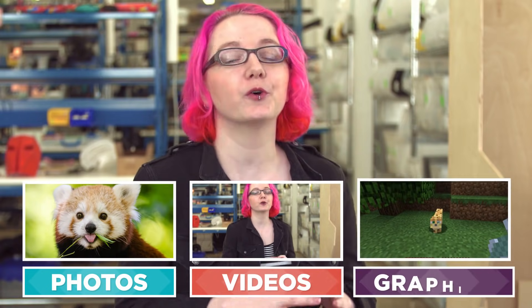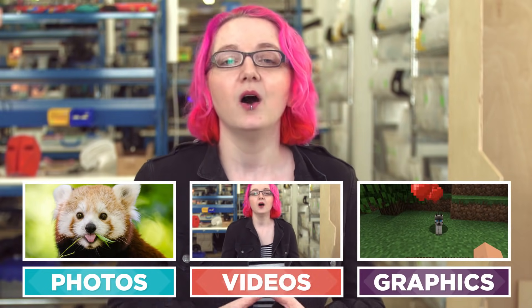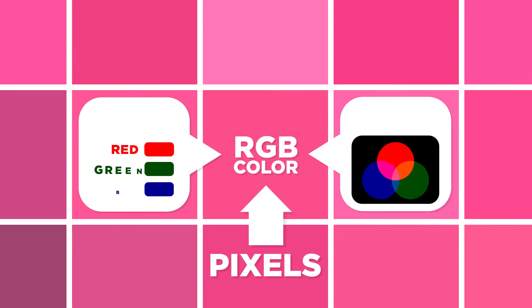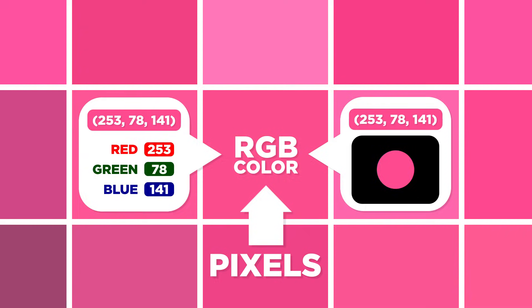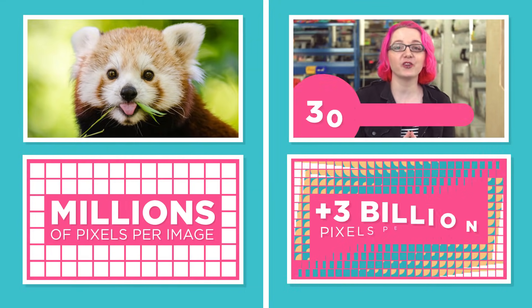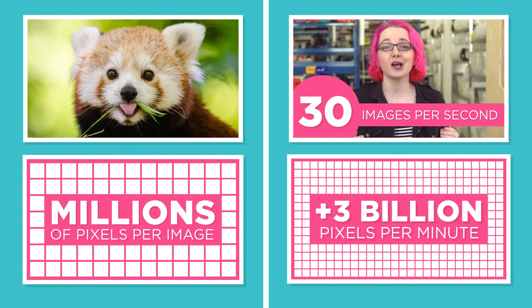Now let's consider photos, videos, and all the graphics you see on a screen. All of these images are made out of teeny dots called pixels, and each pixel has a color. Each of the colors can be represented with numbers. When you consider that a typical image has millions of these pixels, and a typical video shows 30 images per second, we're talking about a lot of data here.